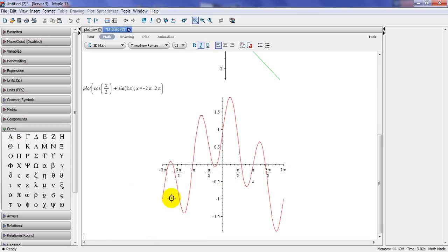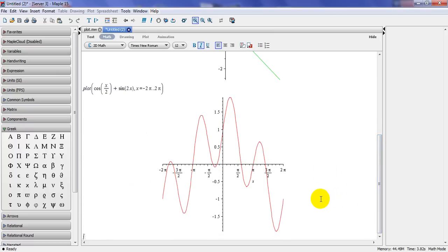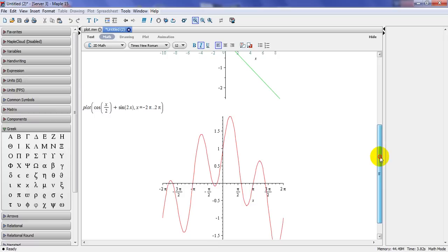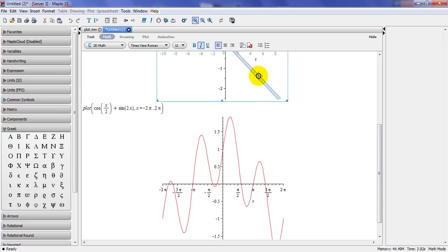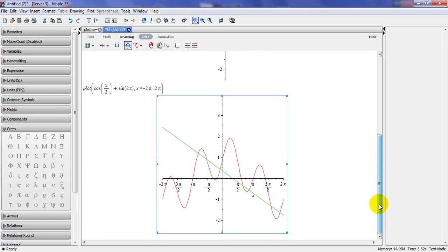So I plot this periodic function from minus 2pi to 2pi. If I want to have more than one plot in a window or combine plots, Maple has made it very simple. So all I do, I choose other plot, hold and drag it to the new window. And as you can see, simply, Maple brings the next plot.